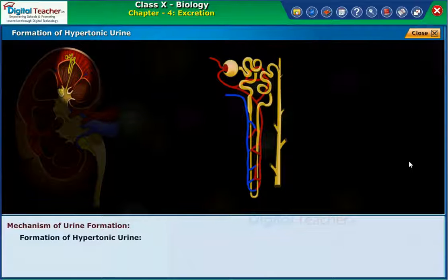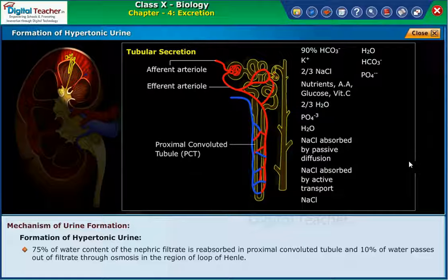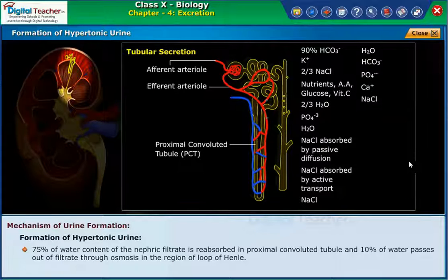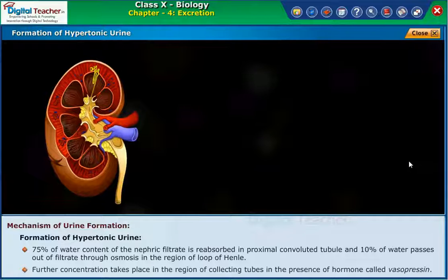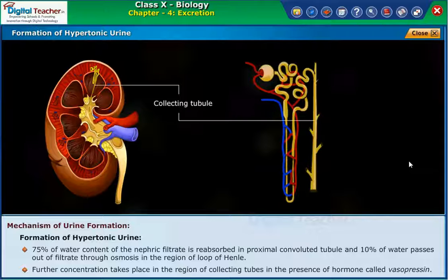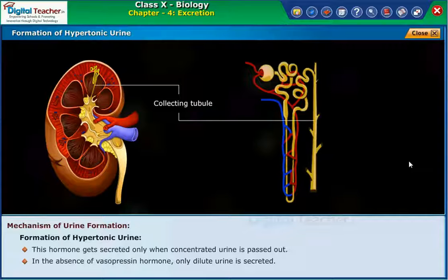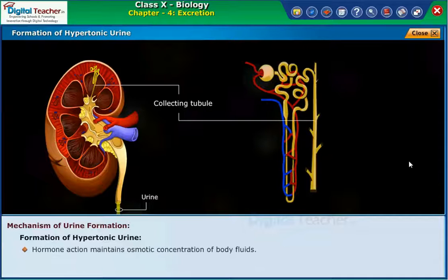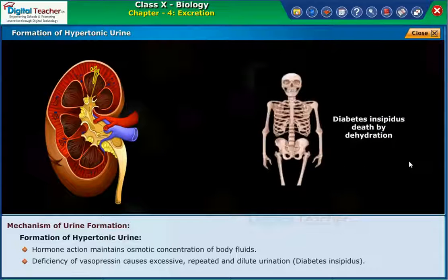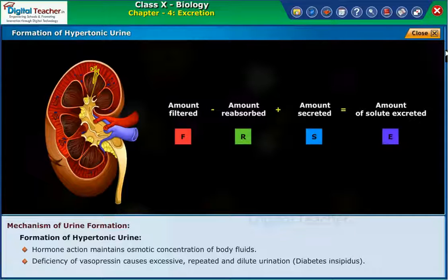Formation of hypertonic urine. 75% of the water content of the nephric filtrate is reabsorbed in the proximal convoluted tubule, and 10% of water passes out of the filtrate through osmosis in the region of the loop of Henle. Further concentration takes place in the region of collecting tubes in the presence of a hormone called vasopressin. This hormone is secreted only when concentrated urine is passed out. In the absence of vasopressin, only dilute urine is secreted. Hormone action maintains the osmotic concentration of body fluids. Deficiency of vasopressin causes excessive, repeated, and dilute urination — diabetes insipidus.